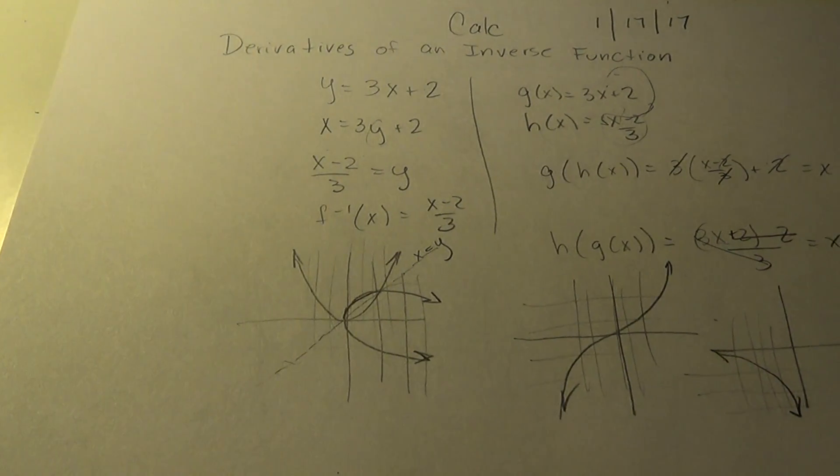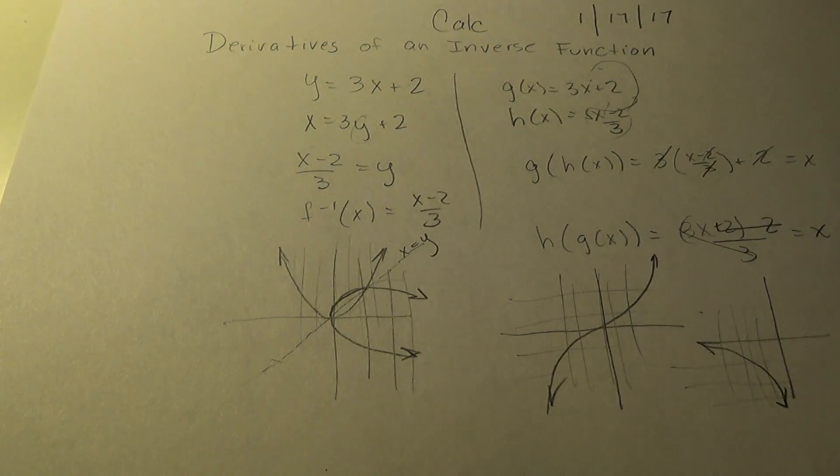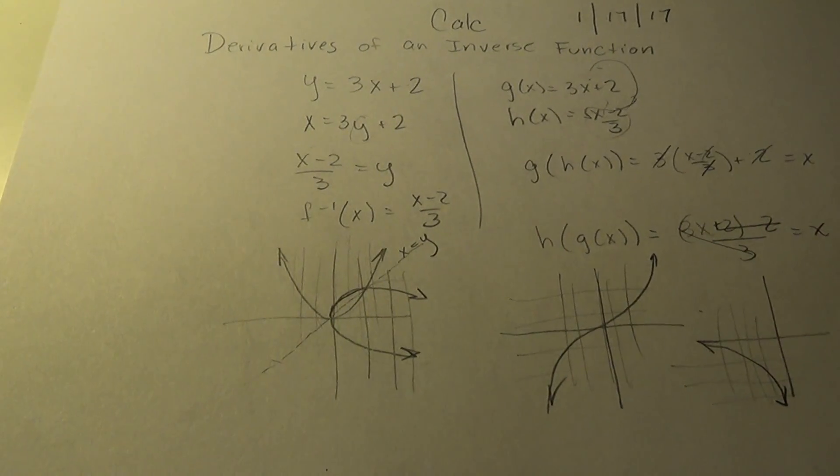Here's the two examples that their inverses are functions. The original would have to pass the vertical and the horizontal line test which says it will not cross more than once on any line. Alright, so that's a real quick review of inverses.